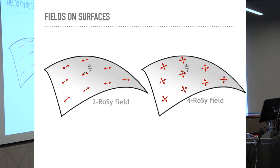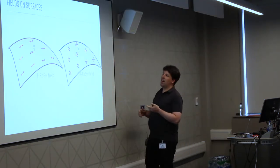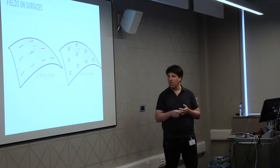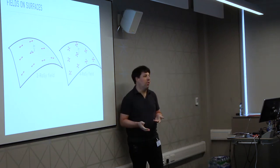What you saw before was something with several directions of moving at a point that kind of don't matter individually. There is a direction but not a specific one — you can move either back or forth. Where we have two directions which are perfectly rotationally symmetric, we have a two-rosy field. In the case with four-rotational symmetry, where we can move in either of the four orthogonal directions without discriminating between them, it's called a four-rosy field.